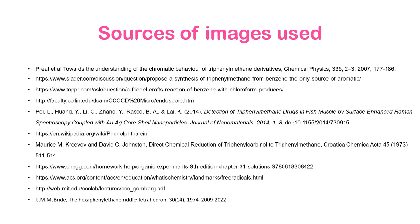These are some references — you can refer to basic organic chemistry books by Bahl and Bahl, or Morrison and Boyd. Additional references include a paper on chromatic behavior of triphenylmethane derivatives published in Chemical Physics, a paper on detection of triphenylmethane drugs in fish muscle, and the history of Moses Gomberg's landmarks in free radical chemistry available on the ACS website. With this we have completed polycyclic aromatic hydrocarbons. Next we will begin a series of lectures on cycloalkanes. Take care. Goodbye.